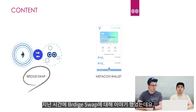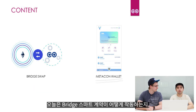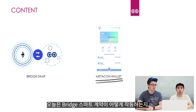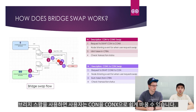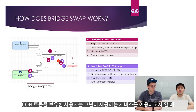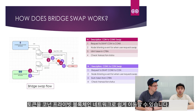Last time we talked about the bridge swap, and today we will look at how the bridge smart contract works and how to use the MetaCon Wallet. Bridge swap allows users to swap their Conix to Con and back easily. Users who have a Con token are able to swap it to the Conon blockchain, and when the user wishes to use Conon's private blockchain, they are able to use Conix.